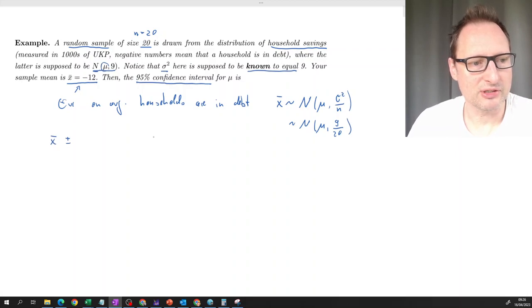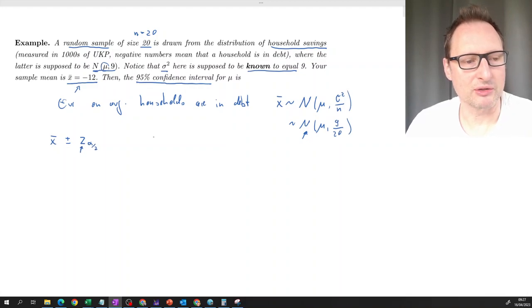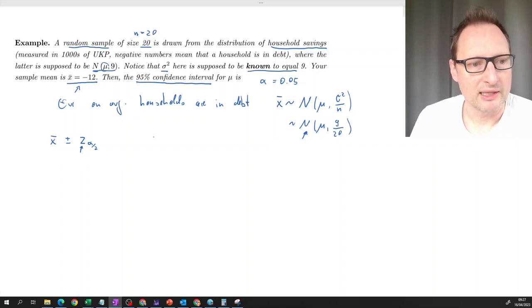Plus minus z alpha over 2. Now z, because we are having a normal distribution, so we're looking at a value from the standard normal distribution alpha over 2, because we want, we have alpha of 5 percent and we're looking for the z value that cuts two and a half percent in each tail of the distribution. Then times the standard error of X bar. So times sigma X bar.